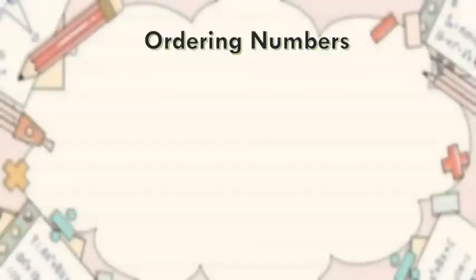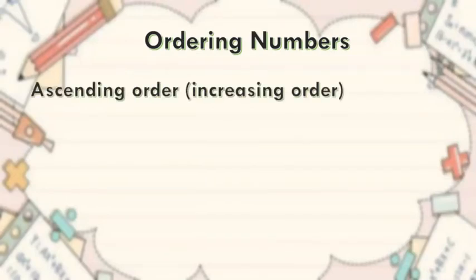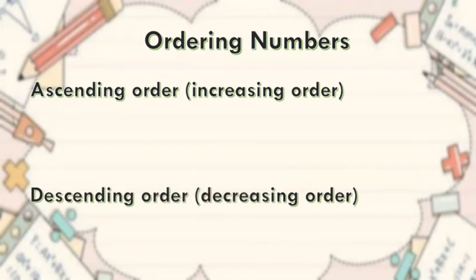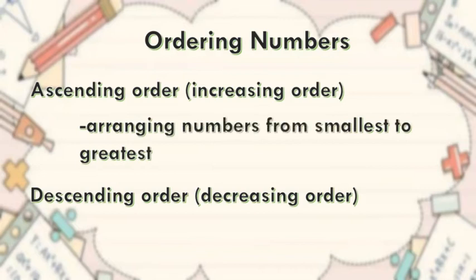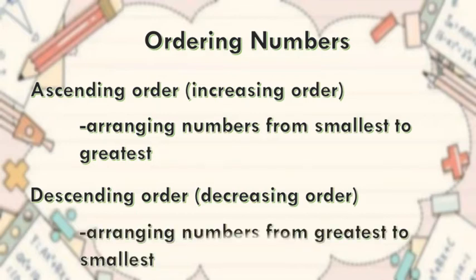Ordering numbers. There are two ways to arrange the numbers: ascending order or increasing order, and descending order or decreasing order. Ascending order means arranging numbers from smallest to greatest, and descending order means arranging numbers from greatest to smallest.